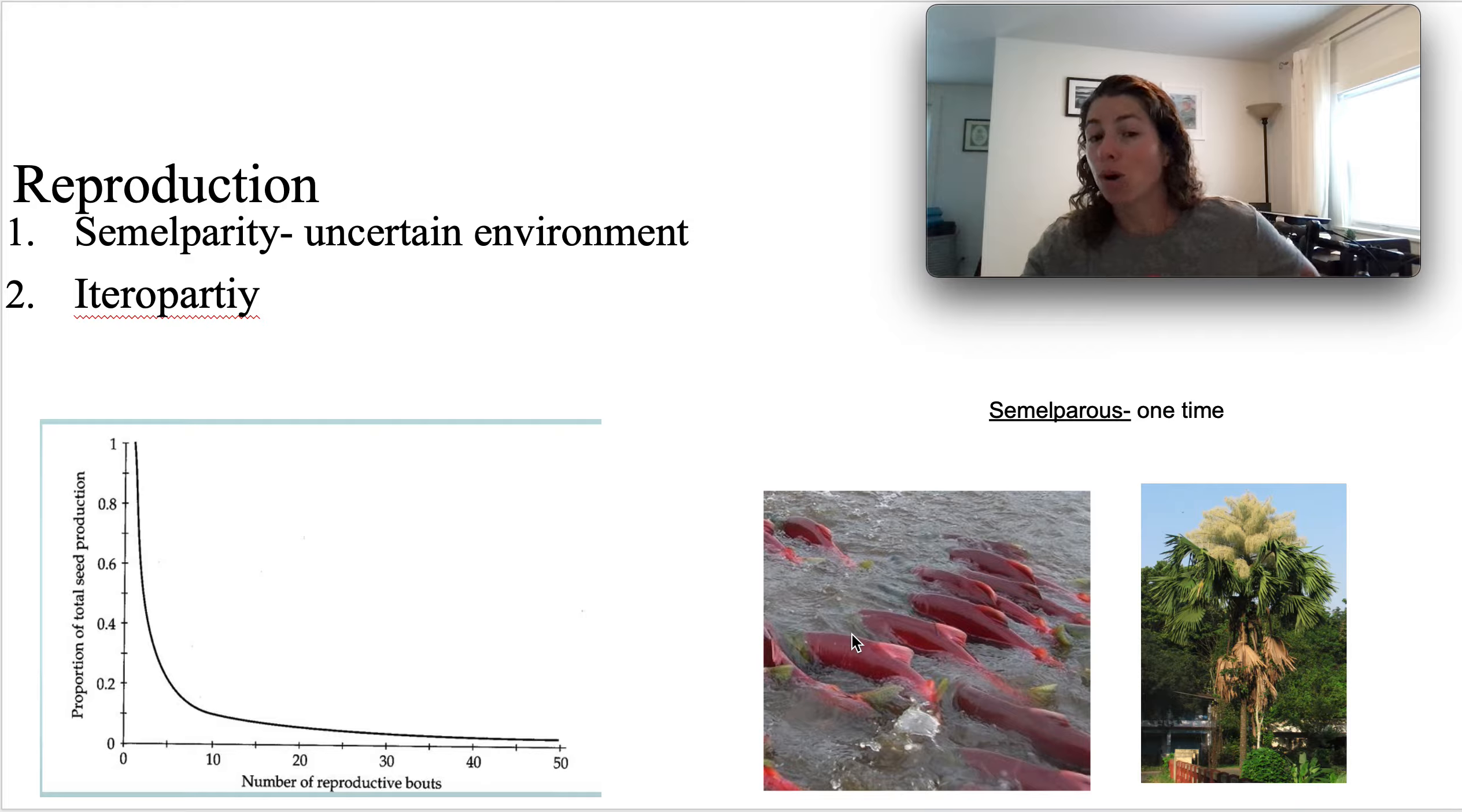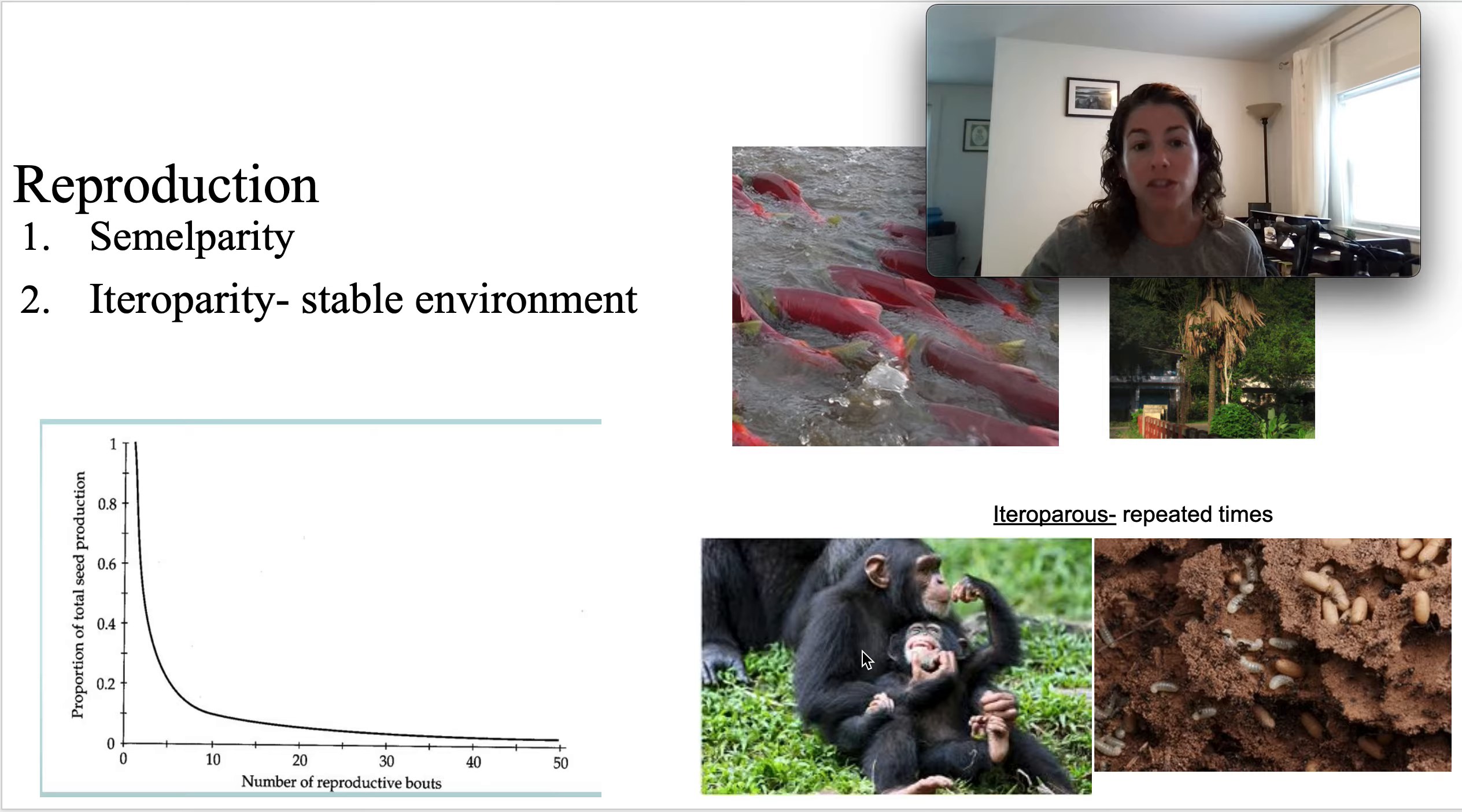Semelparity is more common in an uncertain environment. Basically they're saving up all their resources until the environmental conditions are just exactly right. We actually saw that cicadas are waiting for certain environmental triggers for them to come out from underground and reproduce. So semelparity in very uncertain environments—once those environmental conditions are appropriate for reproduction, they all reproduce and then they all die.